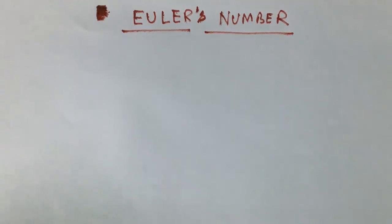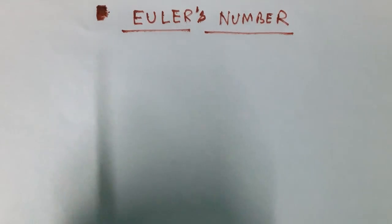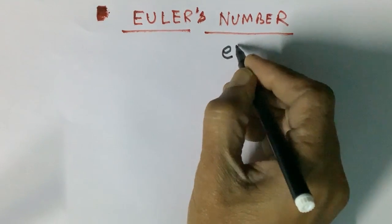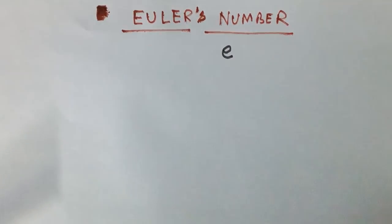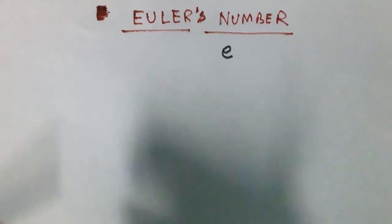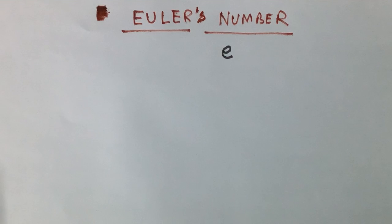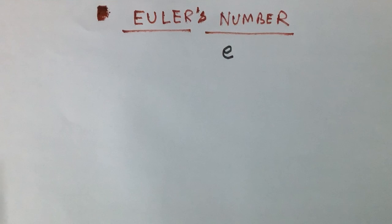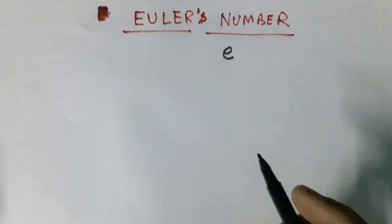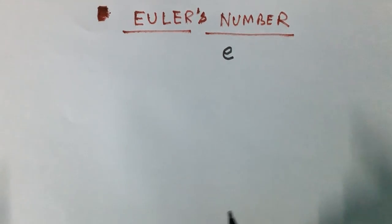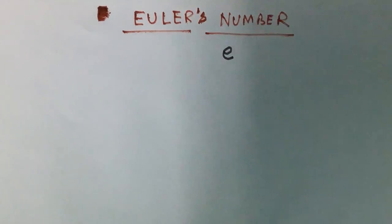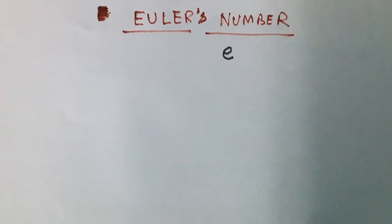Hello students. In this lecture we shall study about a specific number that is called Euler number, represented by small e. You have come across this number many times in your physics formulae and mathematics formulae. Today we shall study about this specific number — what is its value and what is its significance. Please see the video till the end.